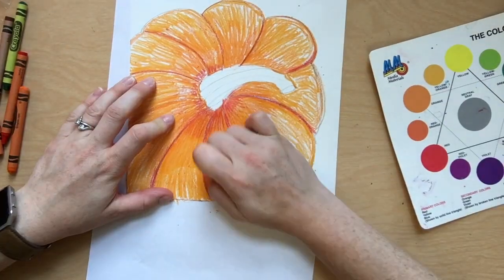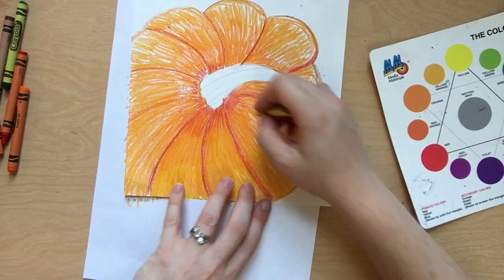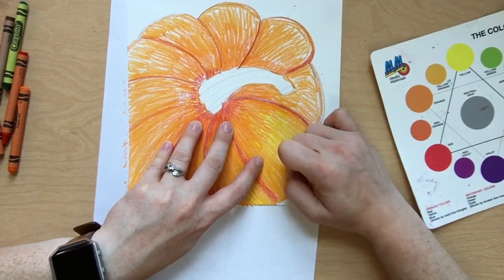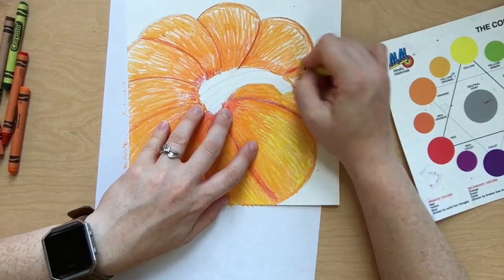Whew! Are you still with me? Is your hand completely tired? If it's not, grab the yellow. Fill in all your white spots on your pumpkin, except for the stem.